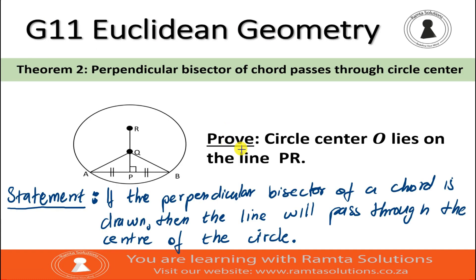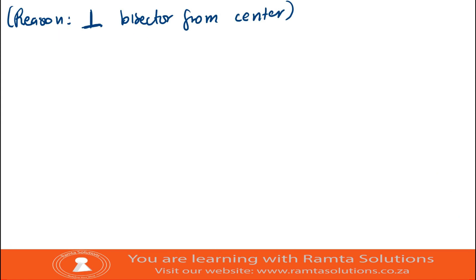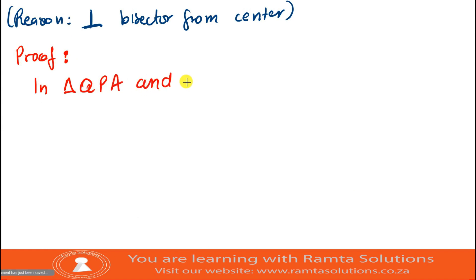This question says we must prove that circle center O lies on the line PR. We can readily use QA and QB. I will begin by considering triangle QPA and triangle QPB.